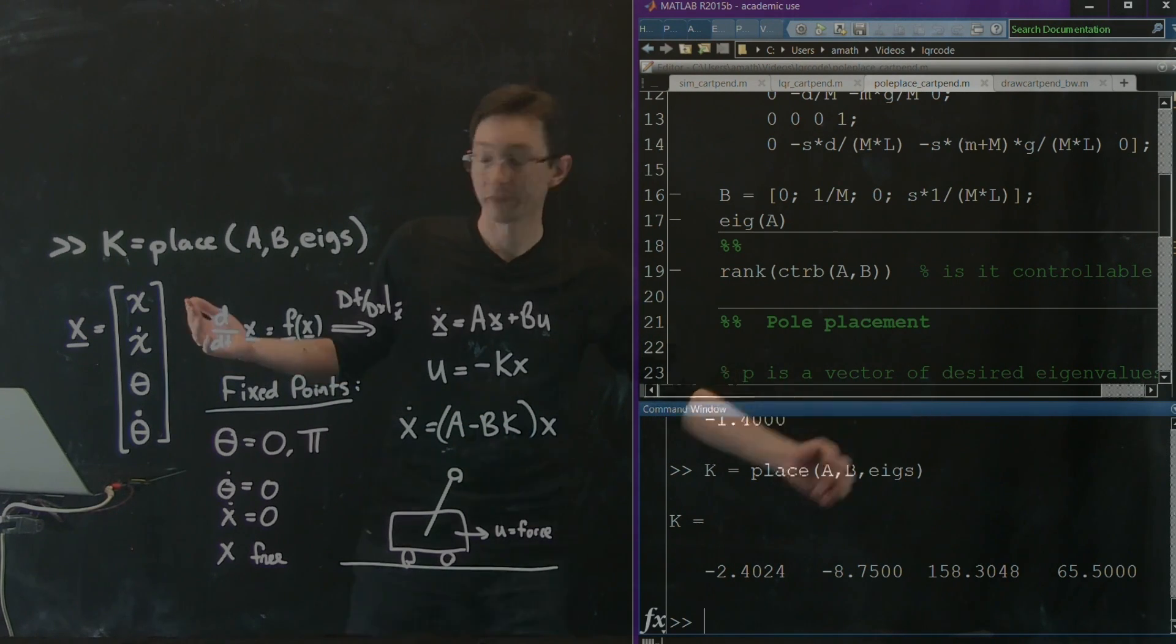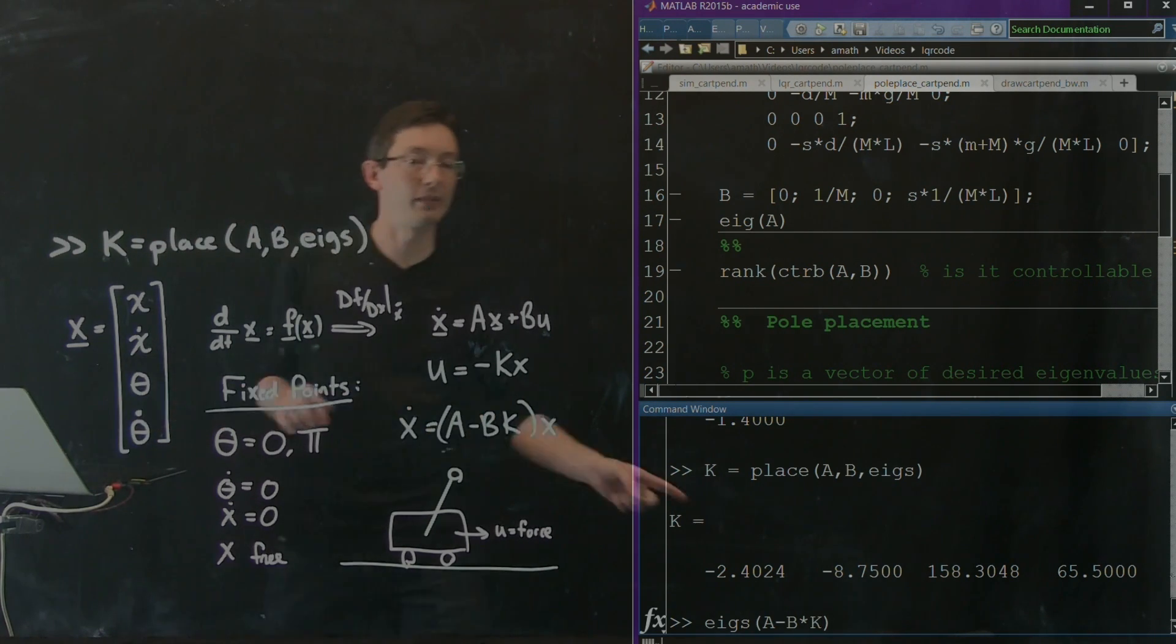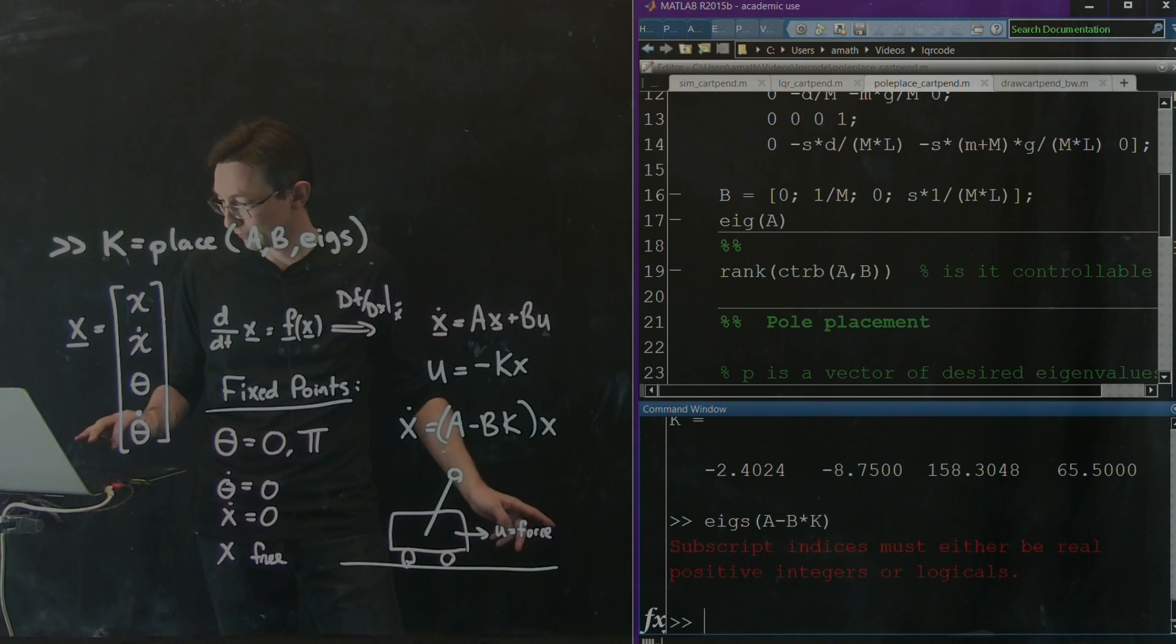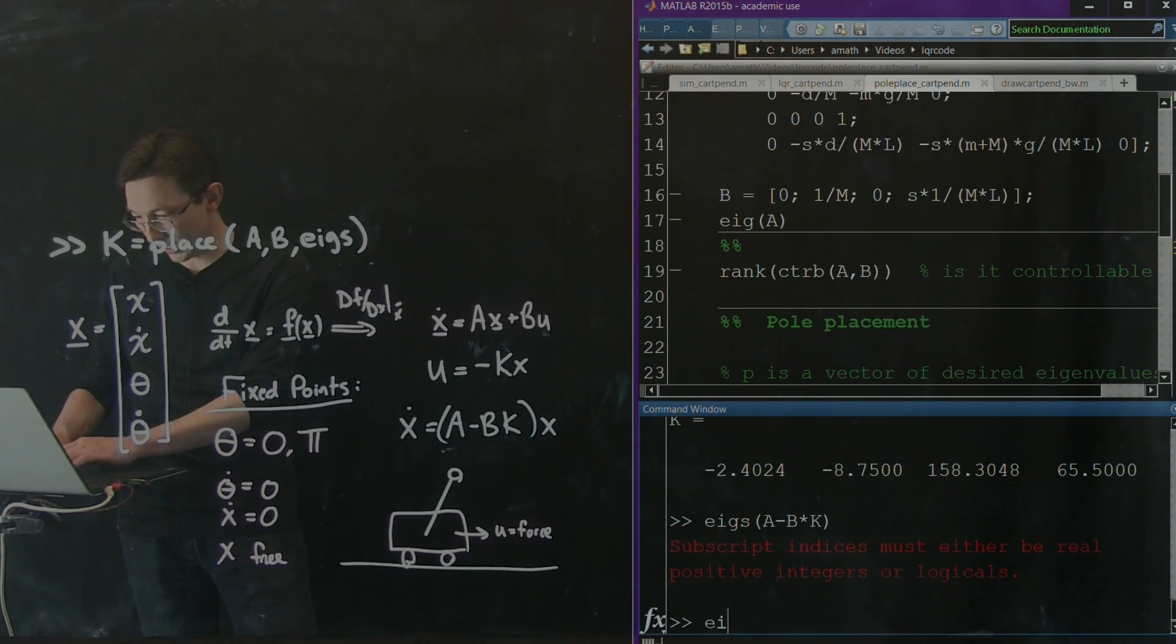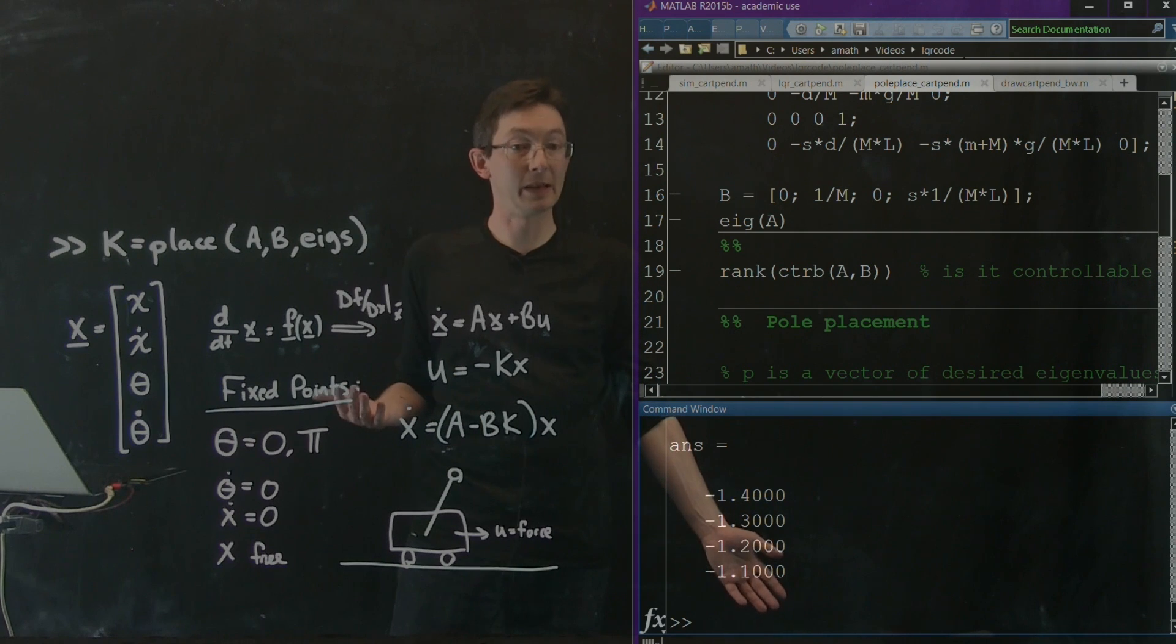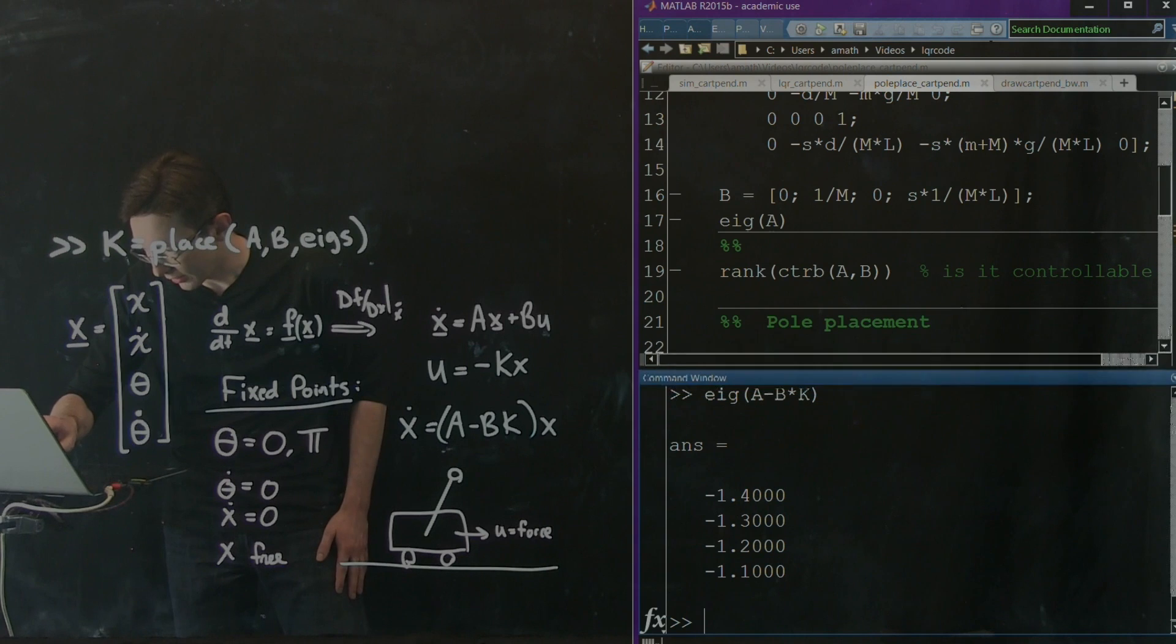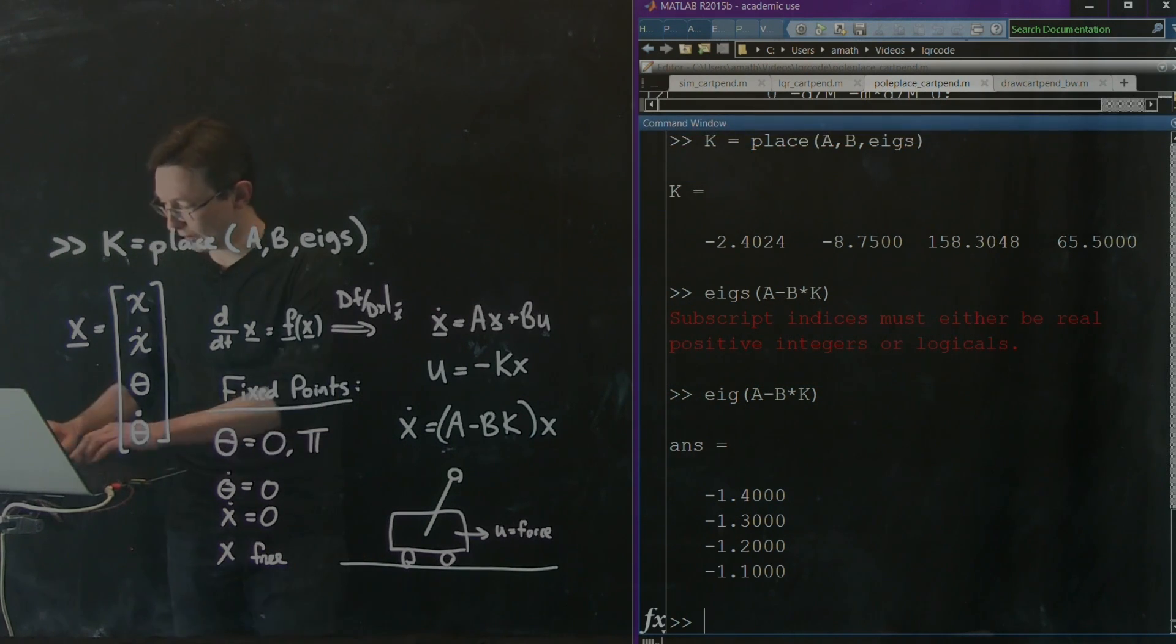And now if I look at eigs of A minus B times k, and I'm hoping that it's minus k and not plus k. We'll try this. Oof! eig of A minus B times k. Lo and behold, I get exactly the eigenvalues that I specified. Everyone follow that. Let me just expand this a little bit.